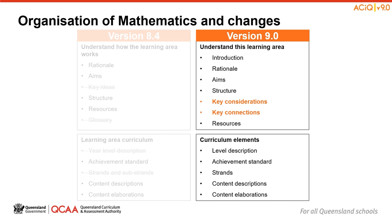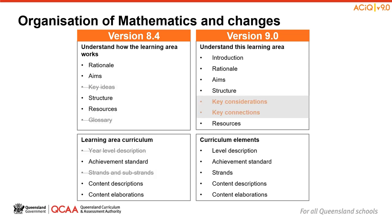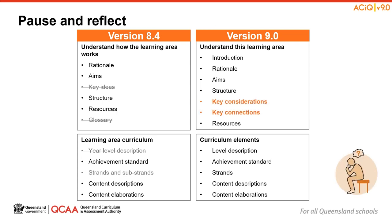Each learning area in Version 9 now follows a similar structure, allowing for more consistency when planning. Version 9 begins with the Understand This Learning Area section, which provides detail of the intent and a snapshot of the structure. Following that is the Curriculum Elements section, which shows the content associated with mathematics. New sections indicated in bold and orange are the key considerations and key connections, which will at different times influence planning. Understanding the structure of Version 9 and the relationship between the parts is a key factor in strengthening our understanding of our learning area.